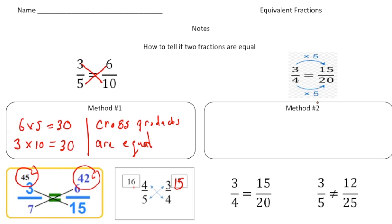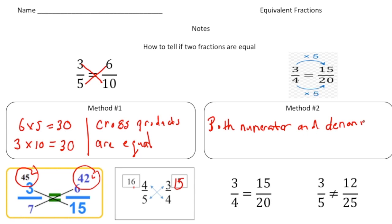The second method to determine if two fractions are equivalent leads back to the first page of the notes. We can tell they're equivalent if both the numerator and denominator of a fraction are multiplied by the same factor. Notice to go from three quarters to 15-twentieths, I multiply three times five and also four times five: three times five is 15, and four times five is 20. So if both the numerator and denominator are multiplied by the same factor, you know the fractions are going to be equal.